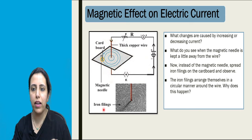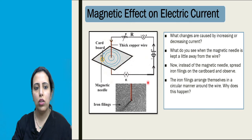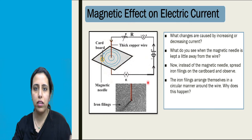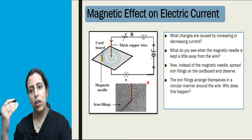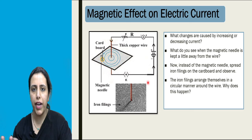Now we have seen this experiment. There are some questions that occur in mind. Let's solve those queries. Like, what changes are caused by increasing and decreasing current? Here current is flowing. But if we suddenly increase the current, what will happen to the magnetic effect? What effect will it have on magnetic field? As soon as we increase the current, the concentric circles become closer. As soon as we decrease the current, it becomes wide, it goes wider.